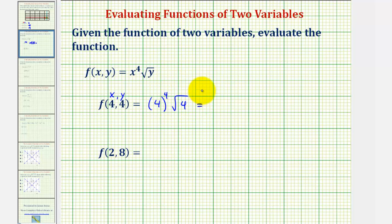Well, four to the fourth power is equal to 256, and the square root of four is equal to two, so we would have 512 for the value of f of four comma four.